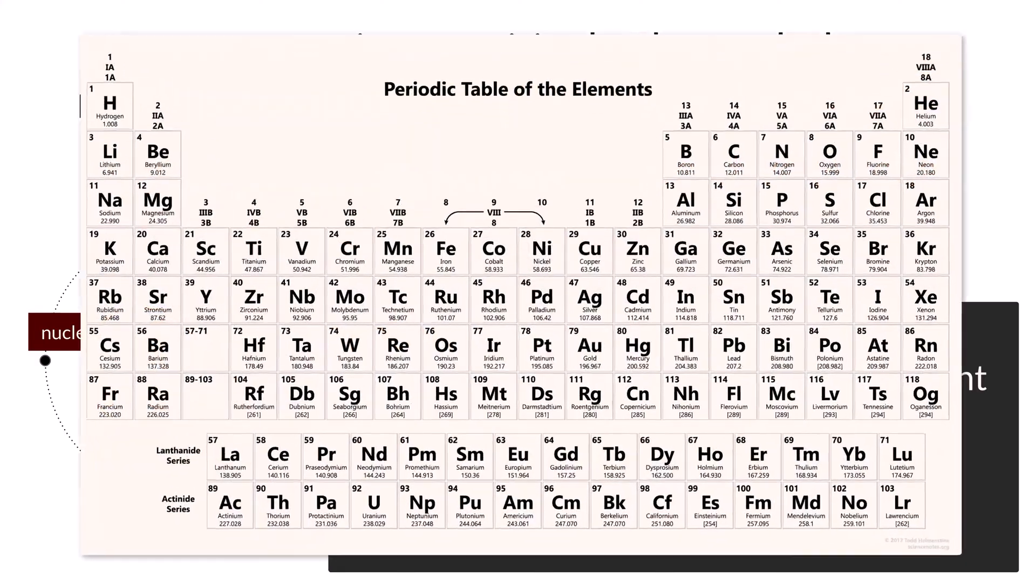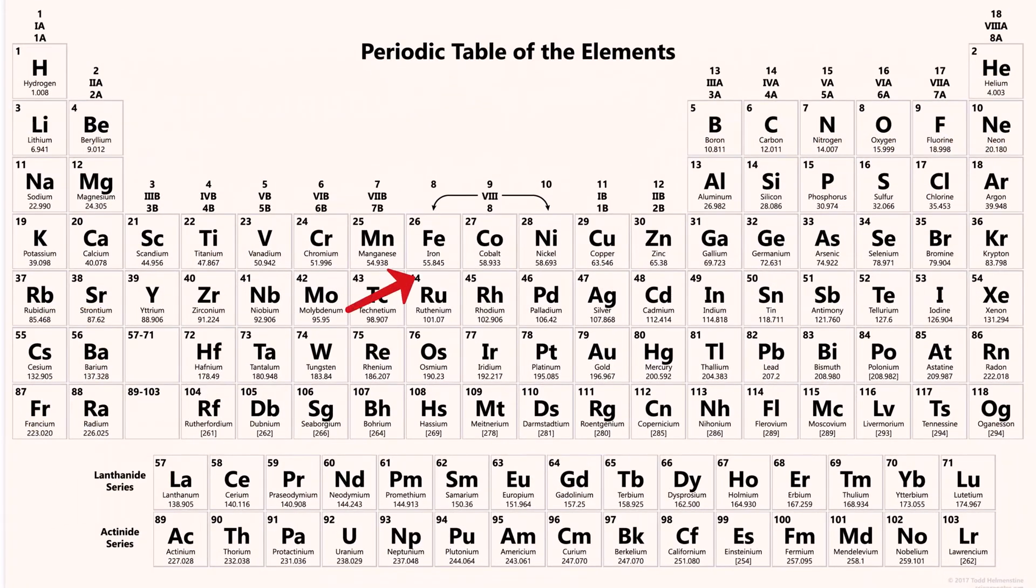When looking at a periodic table, every element has their atomic number displayed above the chemical symbol. For example, we can see that carbon has an atomic number of 6, which means it has a total of 6 protons in its nucleus. Calcium has an atomic number of 20, meaning we would find 20 protons in the atomic nucleus of every calcium atom.